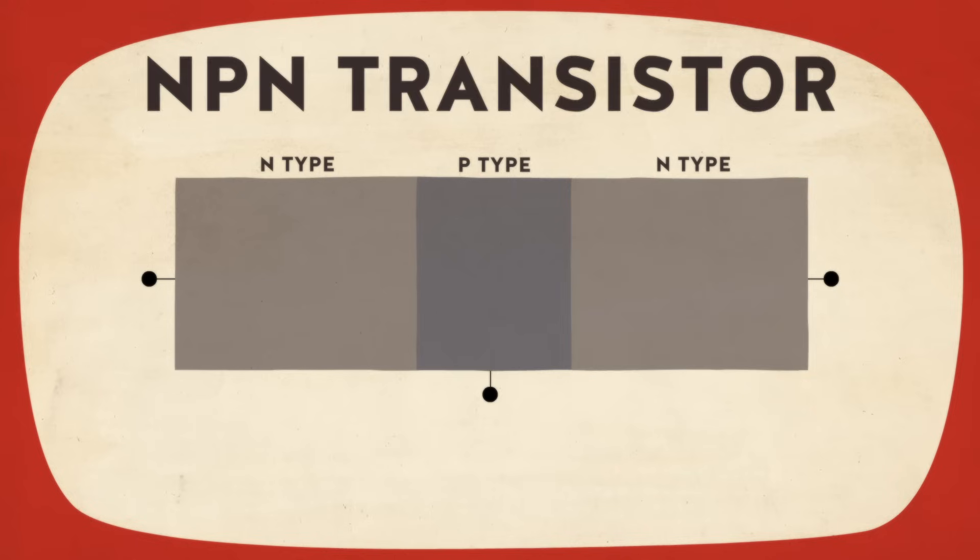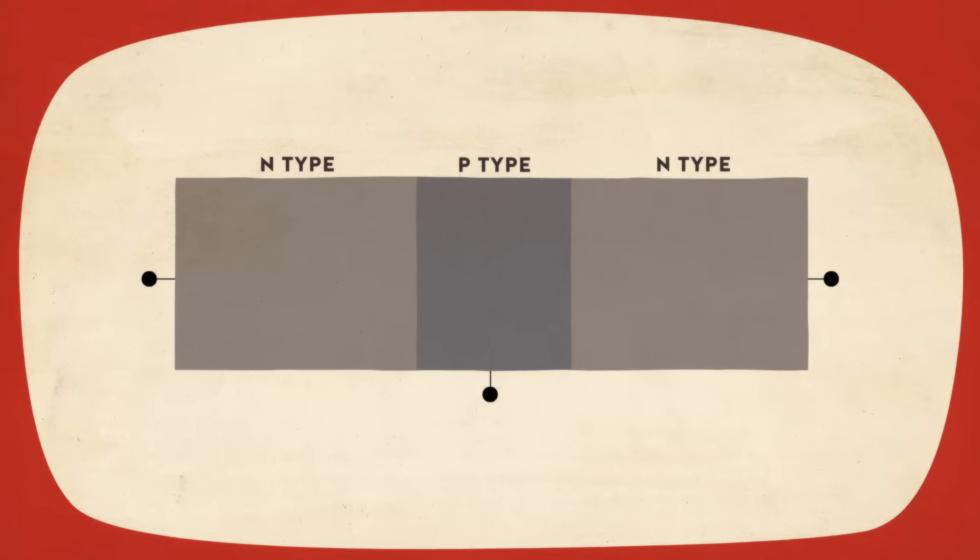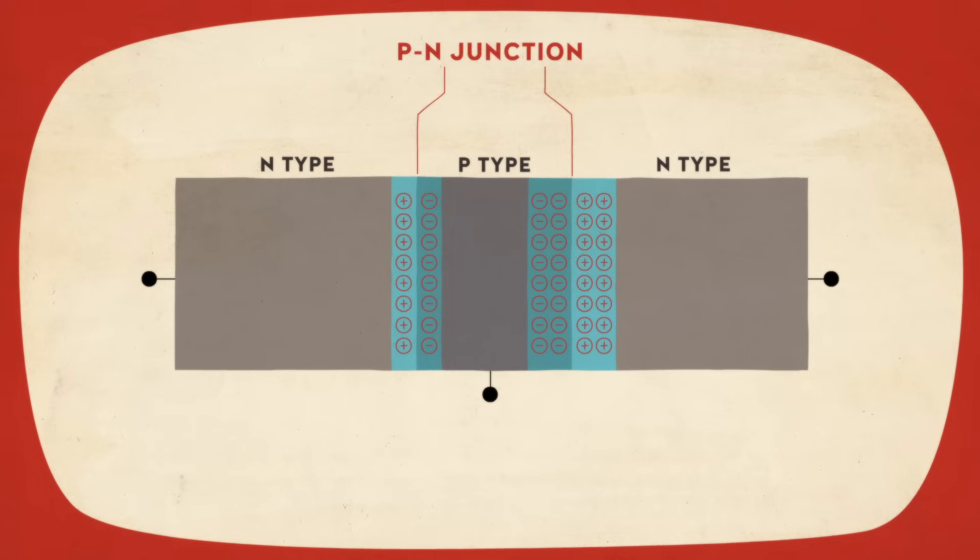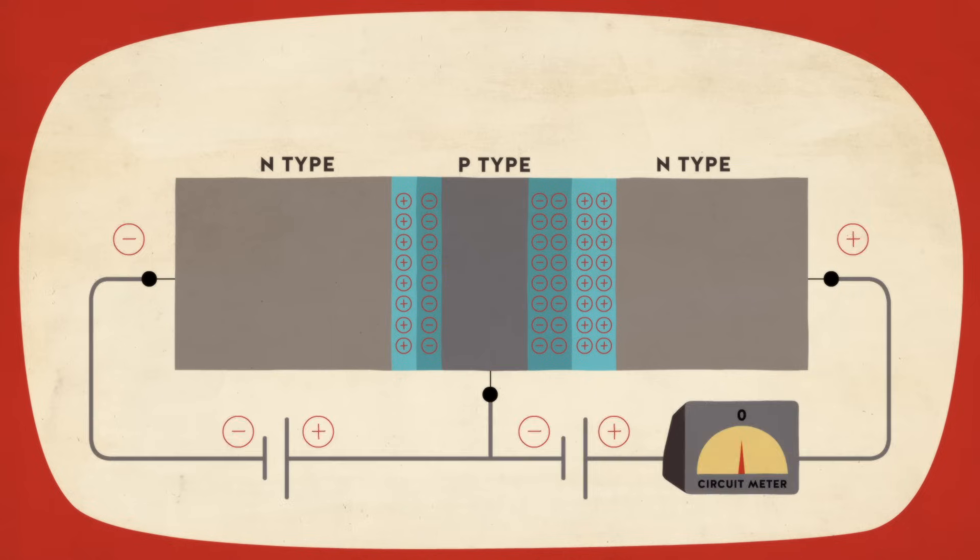In this typical NPN transistor, due to certain phenomena at the P-N interface, a special region called a P-N junction forms between the emitter and base. It only conducts electricity when a voltage exceeding a certain threshold is applied. Otherwise, it remains switched off. In this way, small variations in the input voltage can be used to quickly switch between high and low output currents.